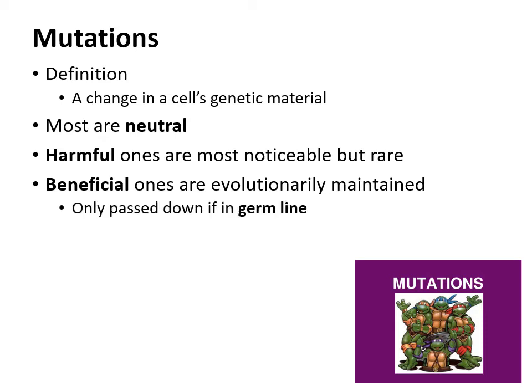Keep in mind, a mutation is only passed down if it is in the germline. Germline is a fancy way of saying gametes — meaning sex cells, such as sperm or egg.